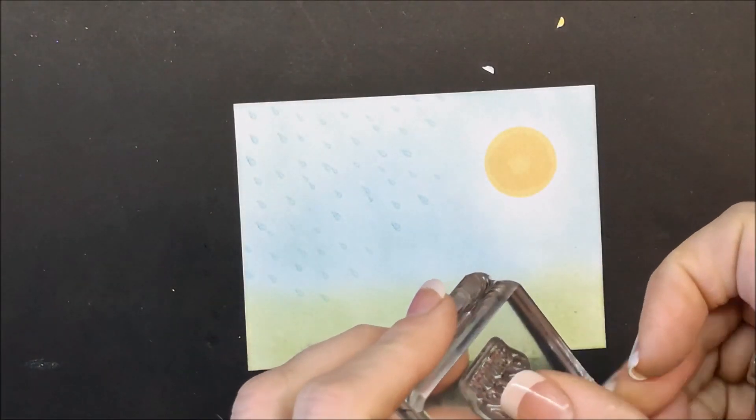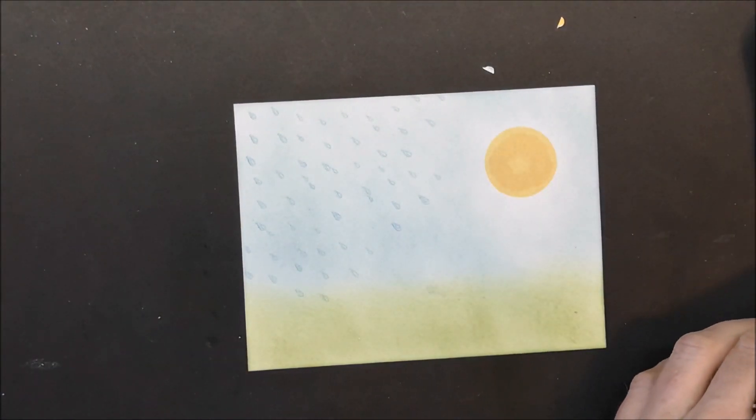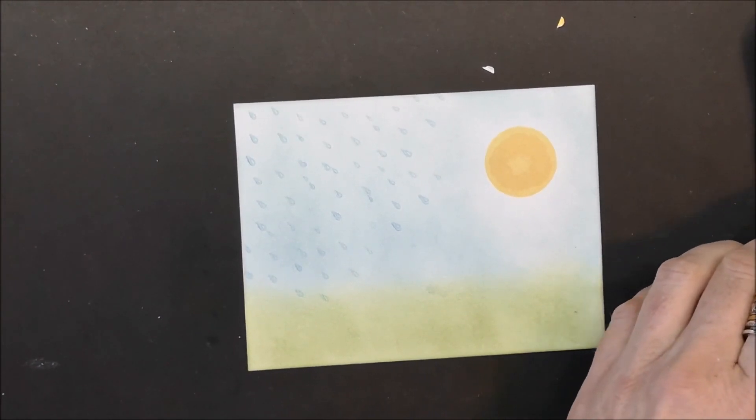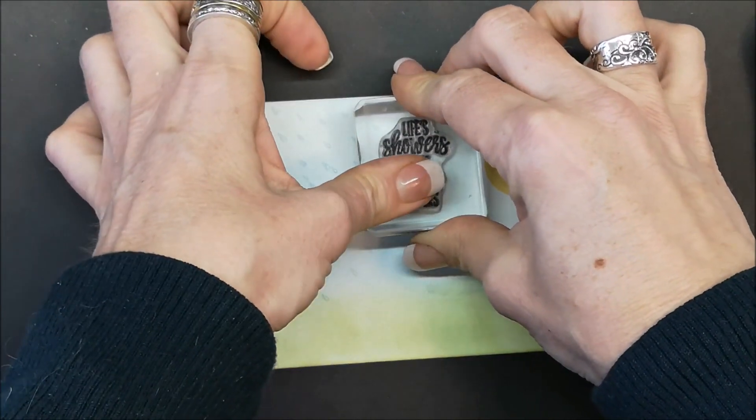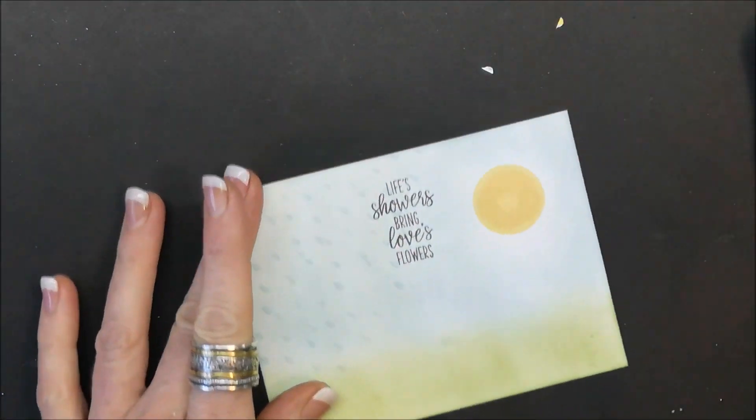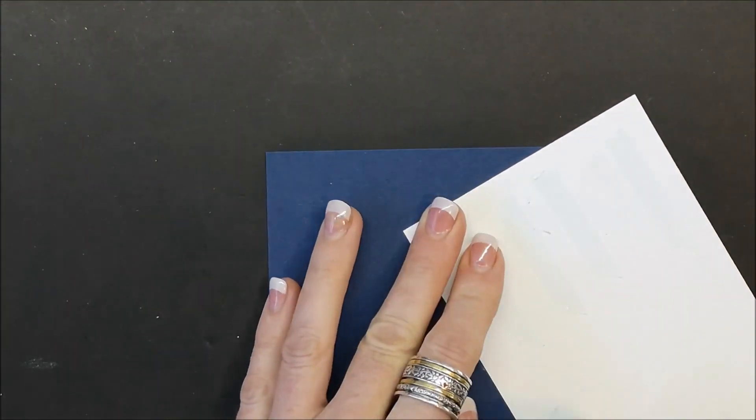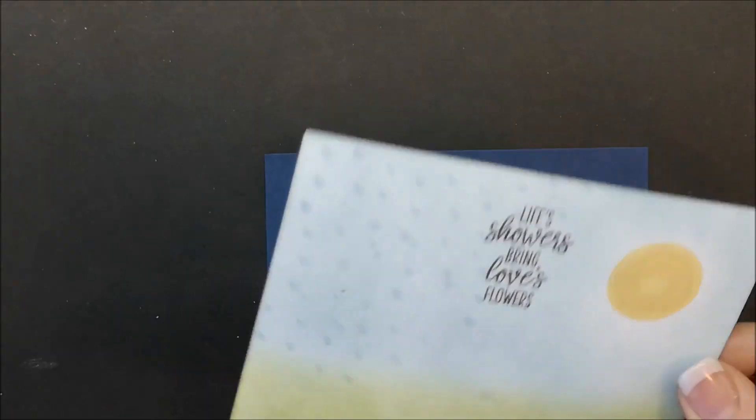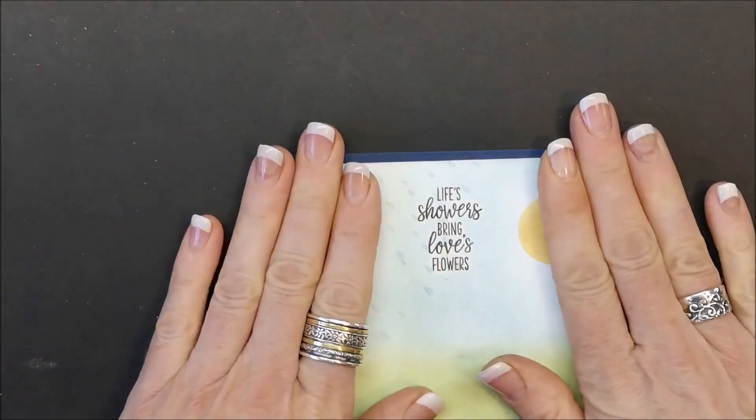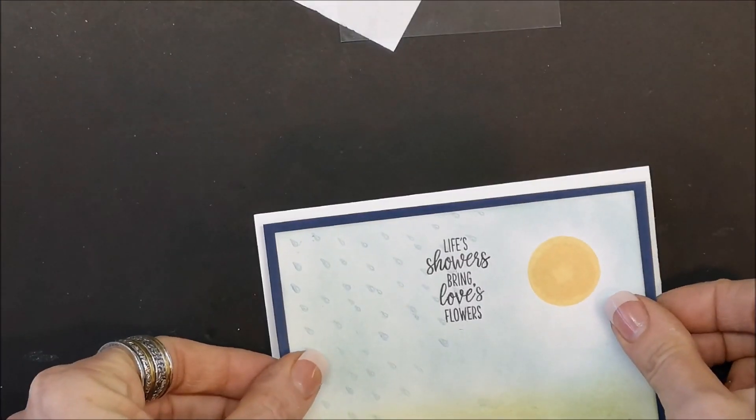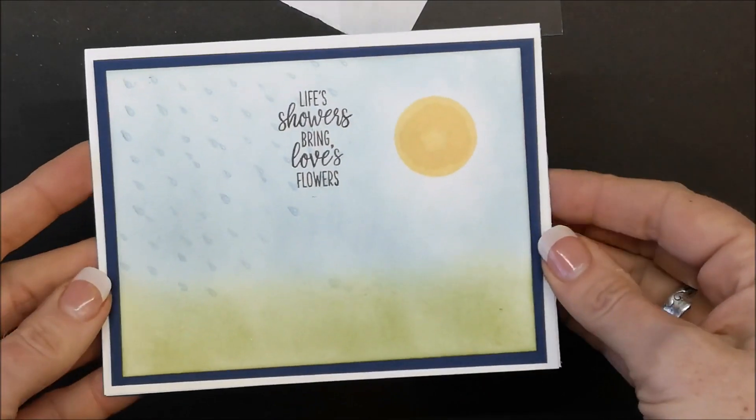Now it's time to add the sentiment. I'm going to stamp it with my black Memento ink pad right in the center just like that. This goes on the Night of Navy card layer and then the card base is Whisper White.